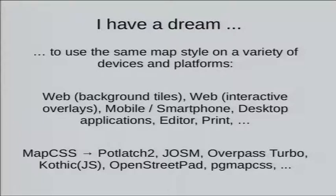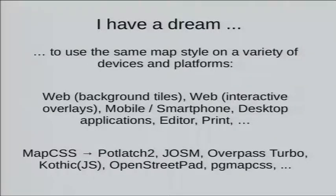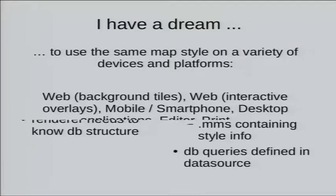MapCSS was originally developed for Potlatch 2, the former standard editor on the OpenStreetMap homepage. But JOSM adapted it and JOSM has the best support for MapCSS now, although it has some differences. Then there's Overpass Turbo — maybe you know that webpage. There are even JavaScript libraries for online rendering, like OpenStreetPad, which is a library for iPhones, and pgMapCSS. But there are more — this is just a part.